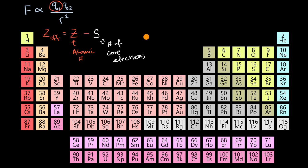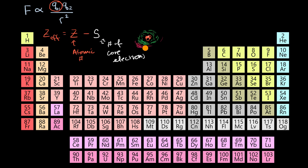If you imagine a nucleus here with protons in it, you have core electrons — let's say in the first shell and in the second shell. Then the valence electrons are in the third shell, blurred around in their orbitals. Those valence electrons, which have a negative charge, are attracted to the positive charge in the nucleus, but they're also repulsed by all those core electrons in between them. That's why an approximation of the effective charge those valence electrons experience is the charge of the nucleus minus the number of core electrons.